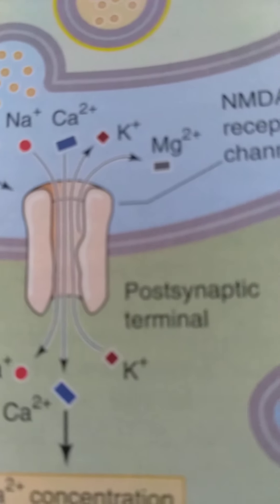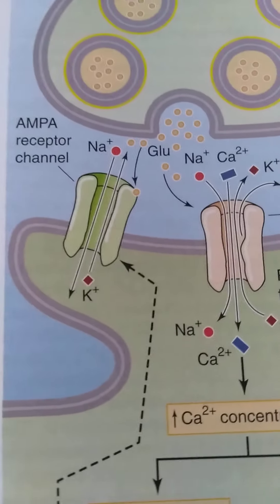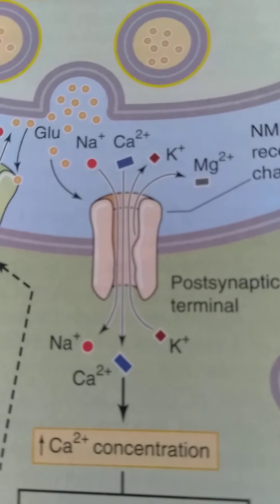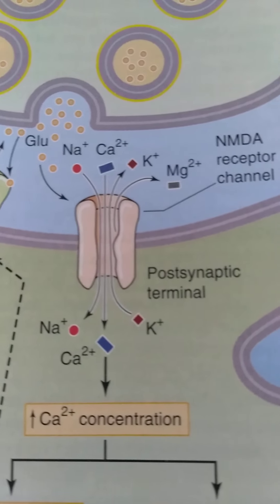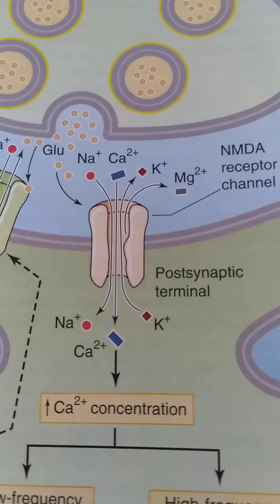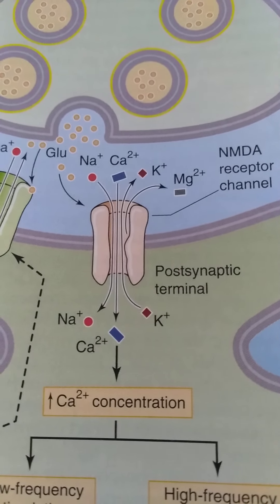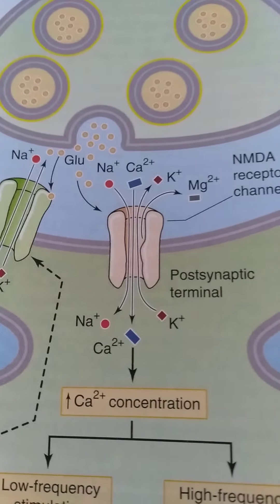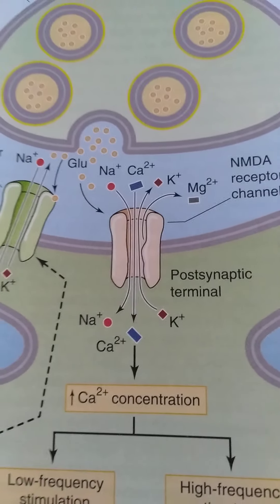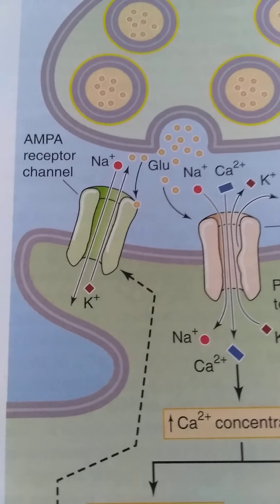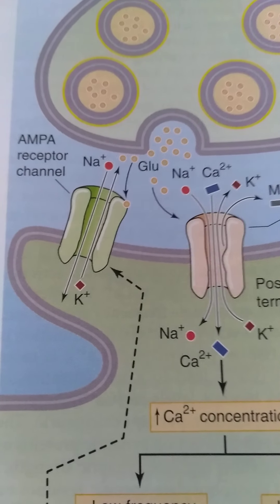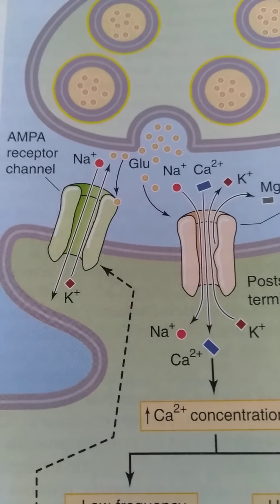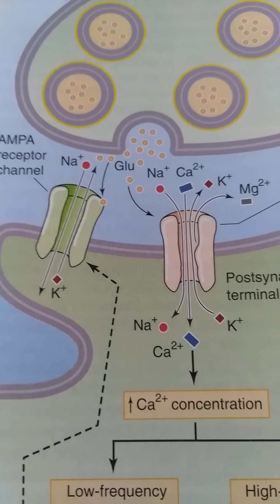The NMDA receptor has a magnesium block. When the membrane is depolarized, this magnesium block gets removed, and sodium and calcium move into the cell while potassium moves out. The rate of influx of positive ions is much greater than efflux. The AMPA receptors also open upon depolarization, with influx of sodium much greater than efflux of potassium.